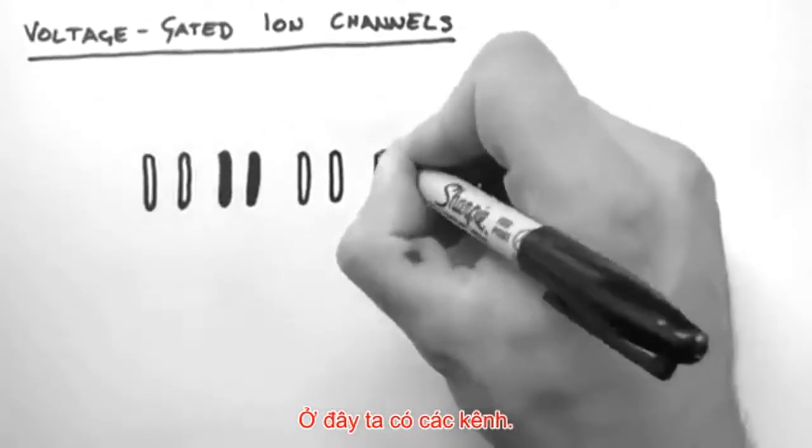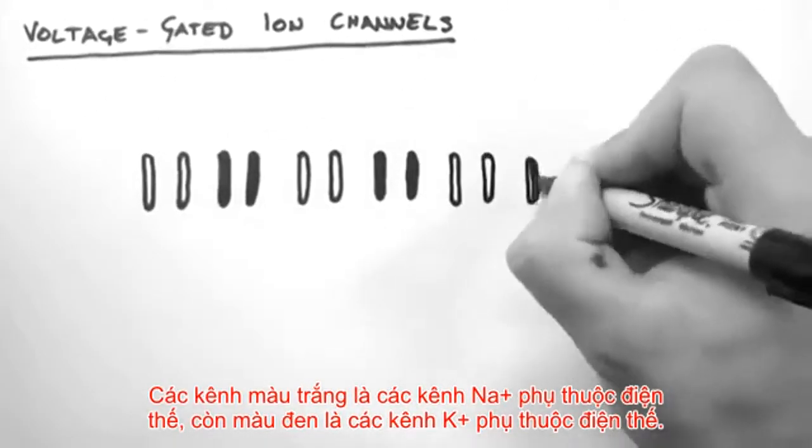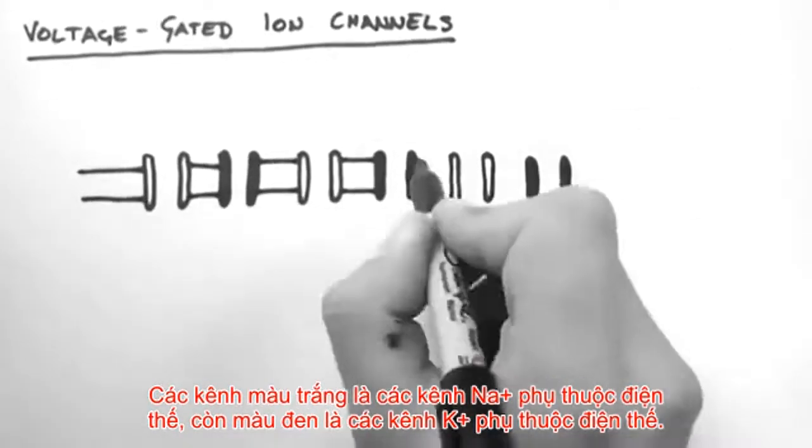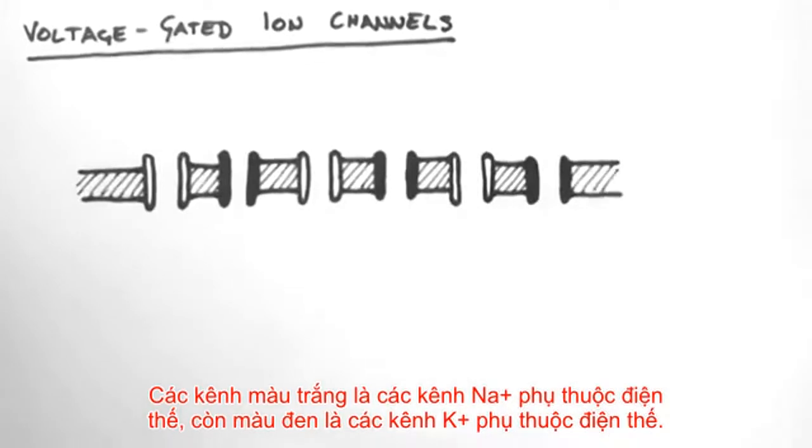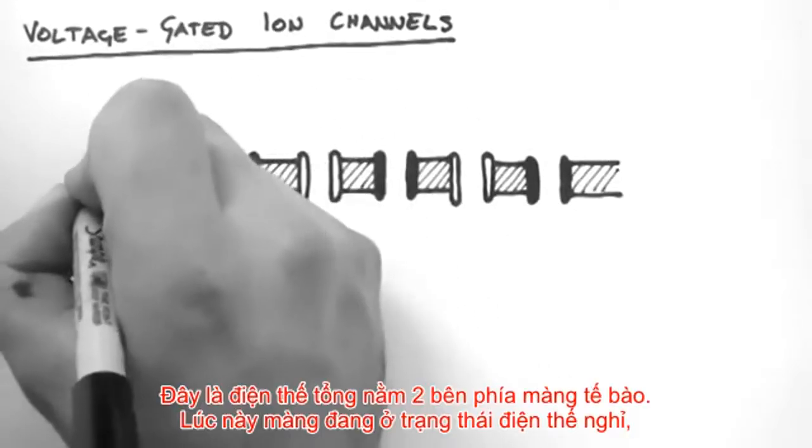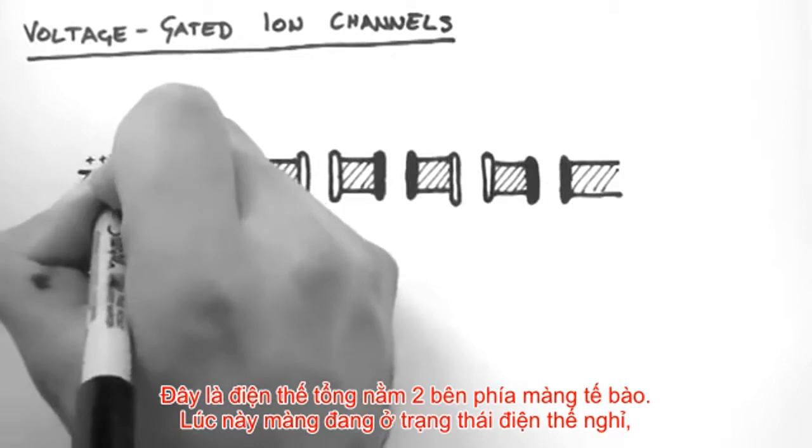So here are the channels. The white channels are the voltage-gated sodium channels and the black are voltage-gated potassium channels. Here are all the charges sitting on each side of the membrane.